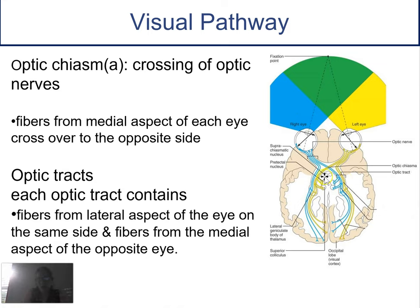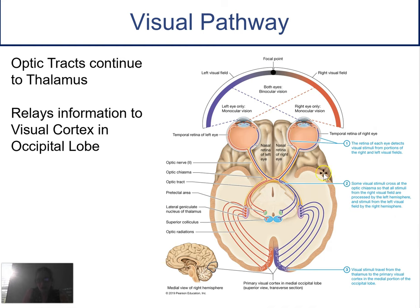The optic tracts carry information back through the superior colliculi — which are involved in turning your head to a sudden visual stimulus — and then to the thalamus, which relays it ultimately to the occipital lobe, where the visual cortex processes everything.